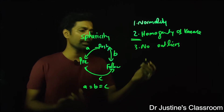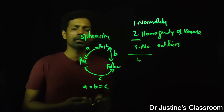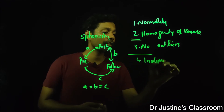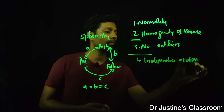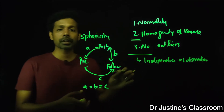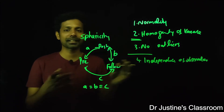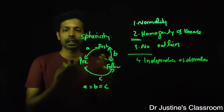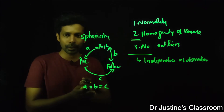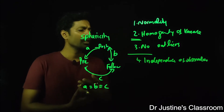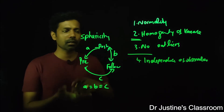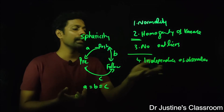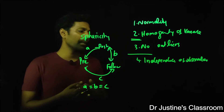Another assumption is independence of observation — all observations must be independent. For example, if one person responds based on another person's response, those two responses are dependent, not independent. Independence can be considered both within a sample and between groups.